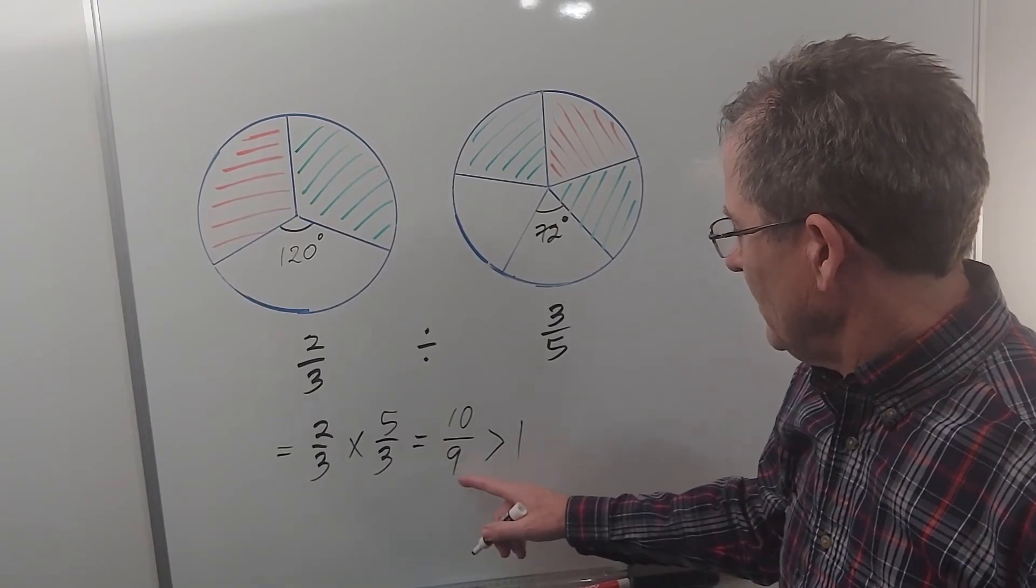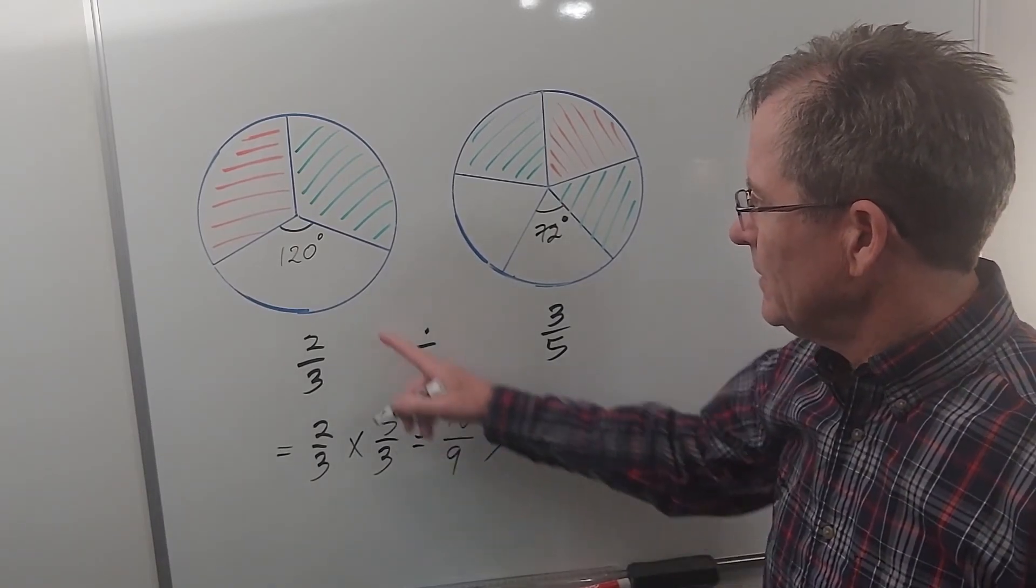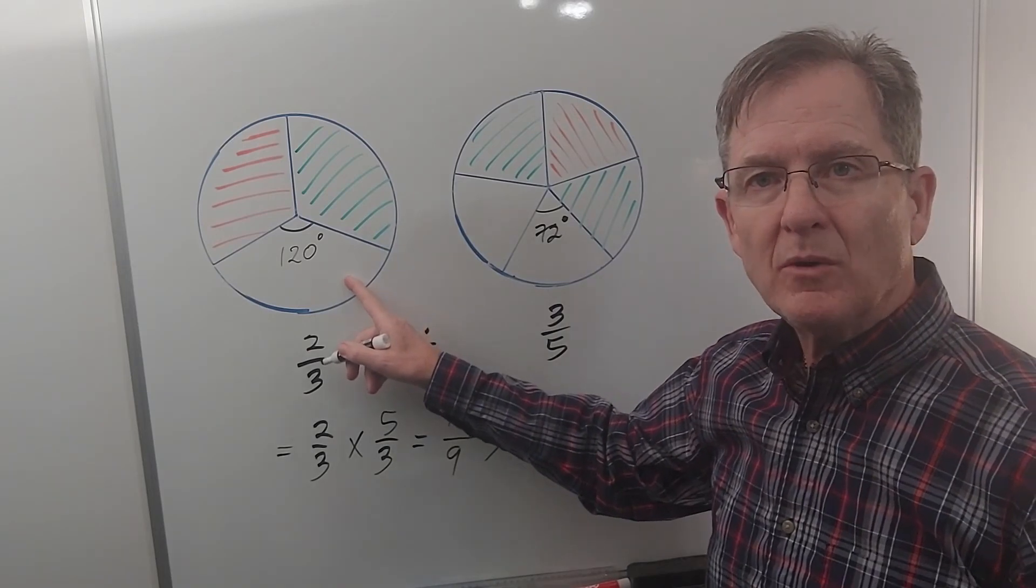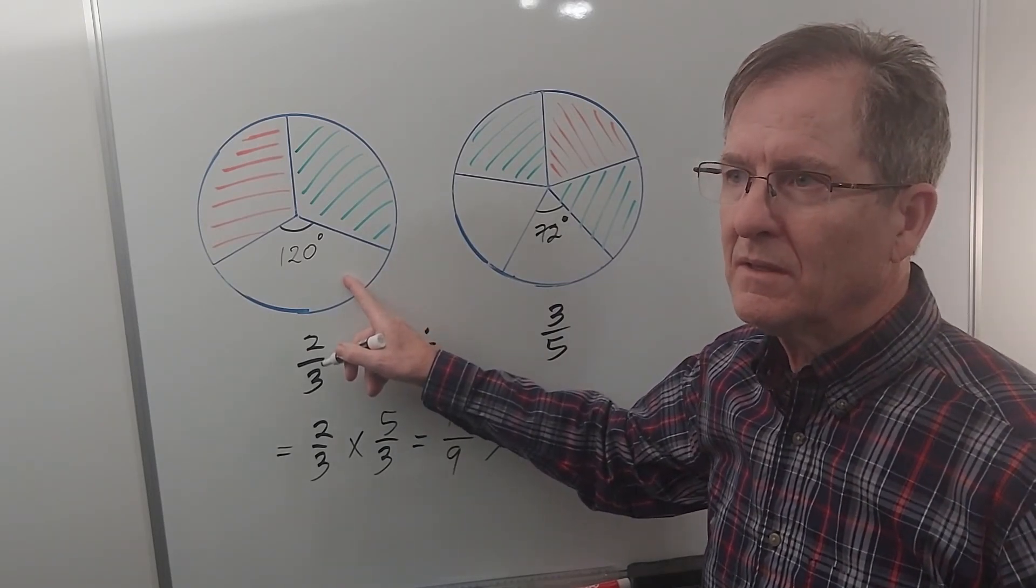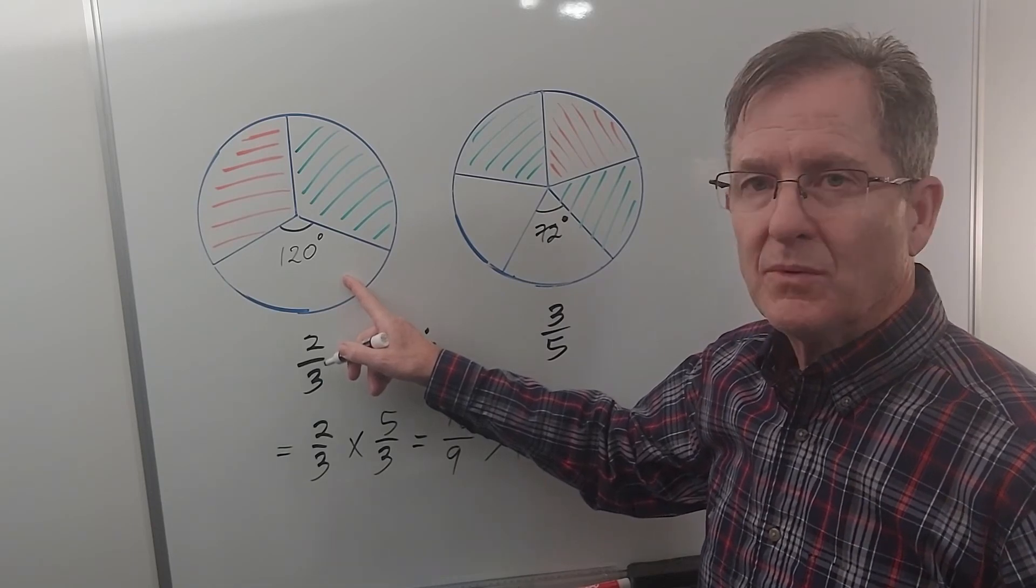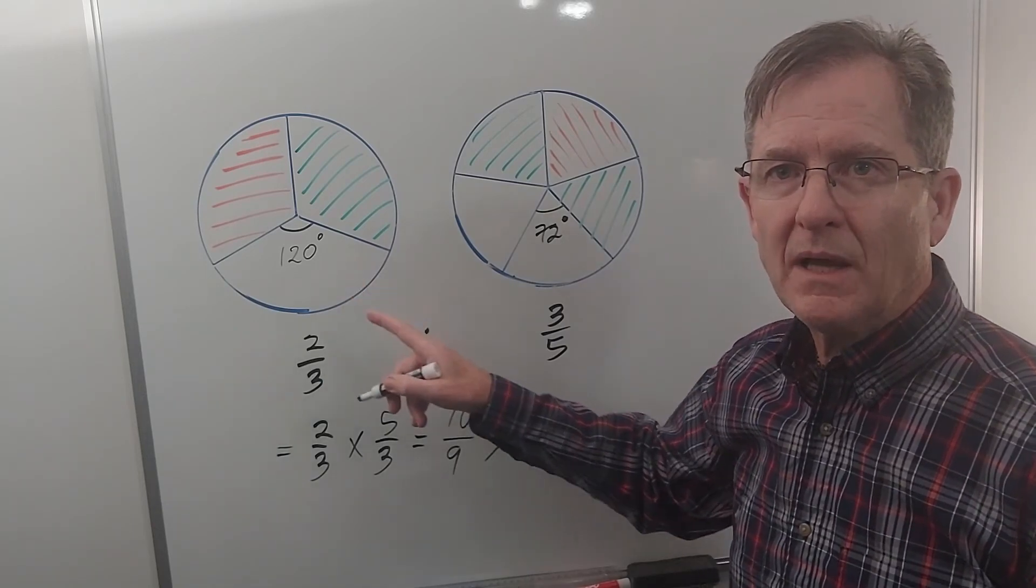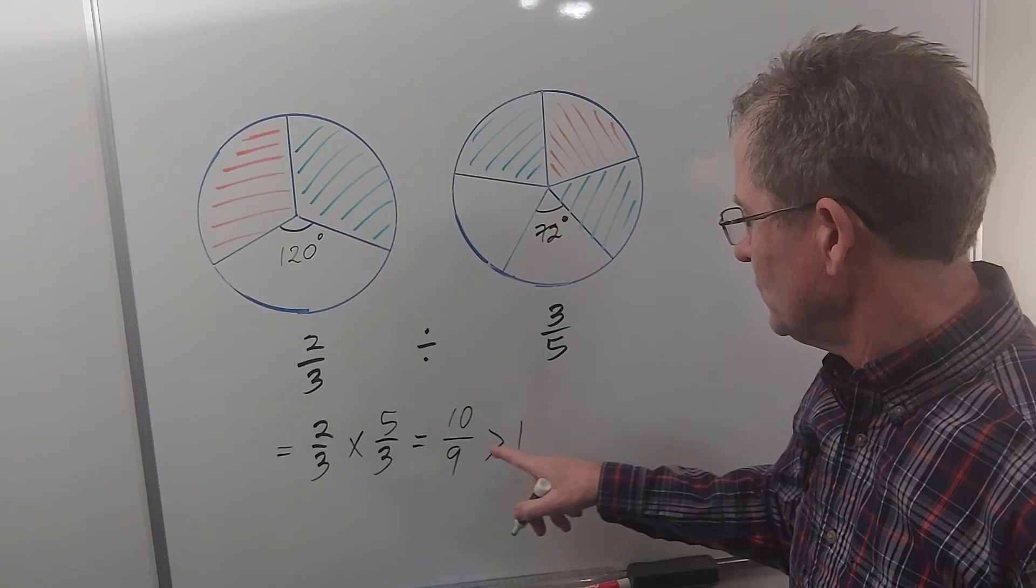So how much is 10 ninths? Well if you had a pie and divided it into 9 equal pieces, where each angle would be I guess 40 degrees, you would have all nine of them plus one more ninth.